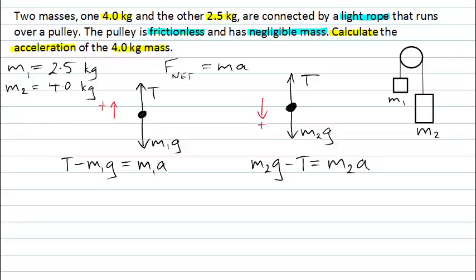You'll note that I've used the same symbol for acceleration in these two equations. Again because they're joined by a rope, they will be moving with the same velocities with the same accelerations. So even though the question asked me for the acceleration of the 4 kilogram mass, it will be the same acceleration for both of the masses.